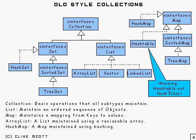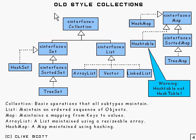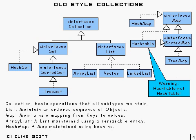To understand one of the main reasons why generics came about, it helps to look at the old-style collections. All these interfaces and classes can be found in the java.util package. What we've got here is a UML diagram of them — there are actually some more than this, but these are just the main ones.